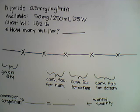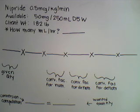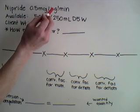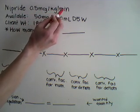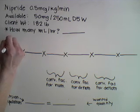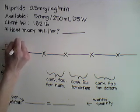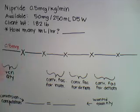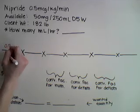We're going to start by identifying our given quantity. In this problem, our given quantity is Nipride 0.5 micrograms per kilogram per minute. You'll notice there are three factors to this quantity: micrograms, kilograms, and minutes. We're going to place 0.5 micrograms in the numerator at the beginning of the equation and kilograms per minute in the denominator.